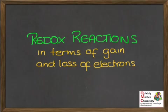If you're given the balanced equation for a fairly simple redox reaction involving elements and ions, you ought to be able to pick out what is being oxidized and what is being reduced. You ought to be able to write half equations to show this, and you also need to be able to say what's acting as the oxidizing agent and the reducing agent in the reaction.